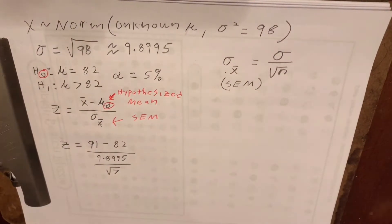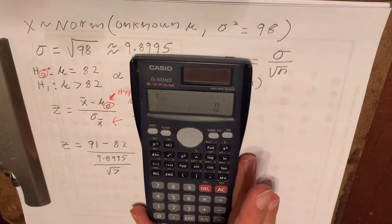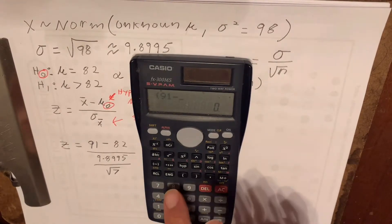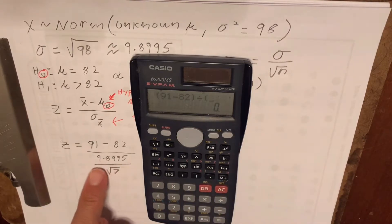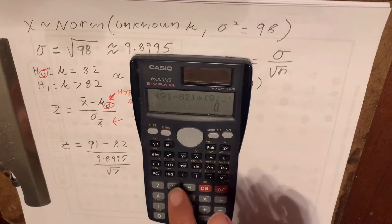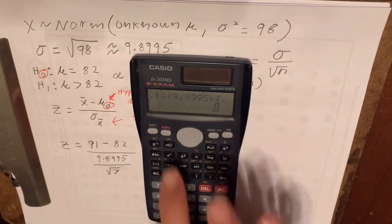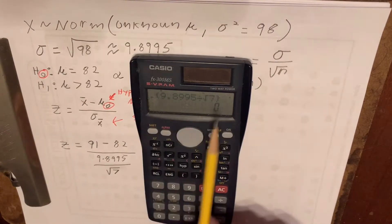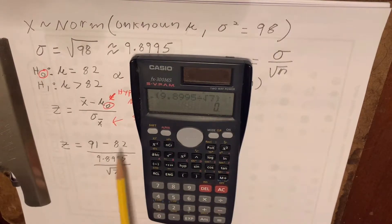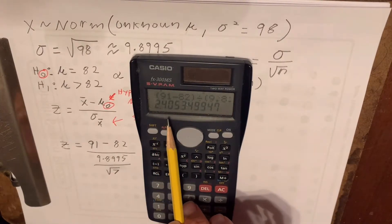Now we put this into the calculator carefully. We enter (91 minus 82) in parentheses, divided by (9.8995 divided by the square root of 7) in parentheses, to show the calculator we have a distinct numerator and denominator. Hitting equals gives us 2.405, which I'll round up to 2.41.